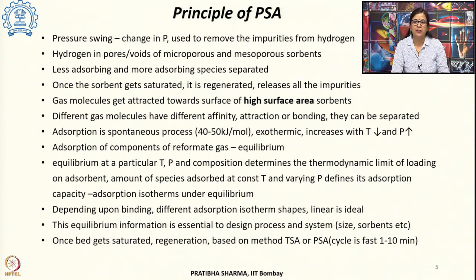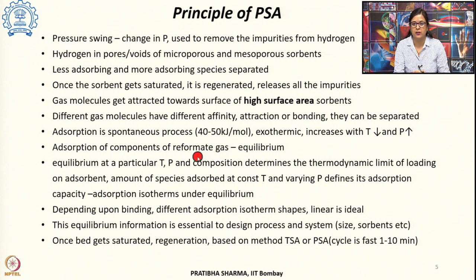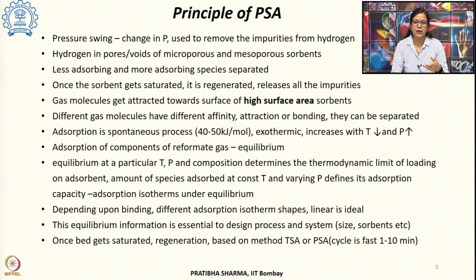When the gas coming from the hydrogen production plant — say the reformate gas — contacts the surface of the adsorbent, adsorption of different components occurs except for hydrogen. At one point the bed gets saturated with impurities and comes into equilibrium. At a particular temperature, pressure and composition, this equilibrium determines how much amount of impurities that particular sorbent can take — that is the thermodynamic limit of loading of the adsorbent.